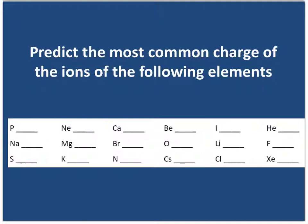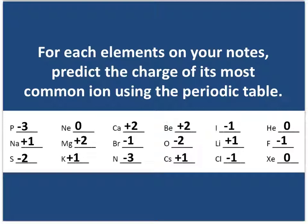You're going to look at your periodic table based on the position of the element and predict their charges. So you can pause the video, and when you're finished, come back and check your answers. You should have checked your answers — here's what they should look like. Remember, these charges are based on their position on the periodic table, which determines their charge based on the number of valence electrons.